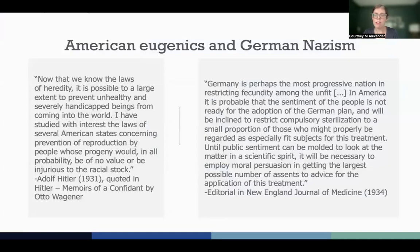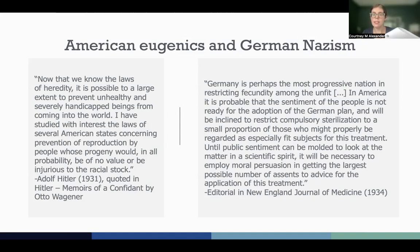This slide shows a quote from Adolf Hitler in 1931, recalled in the memoirs of former Nazi general and Hitler's economic advisor Otto Wagner. This quote was one of several instances in Hitler's conversations and writings in which he claimed to have learned from American eugenics policies. The slide also includes an excerpt from a 1934 editorial in the New England Journal of Medicine — one of the most prominent and prestigious medical publications in the United States — which commended the sterilization program implemented by Nazi Germany. The United States passed its first law allowing sterilization in 1907, 26 years before Germany passed theirs.